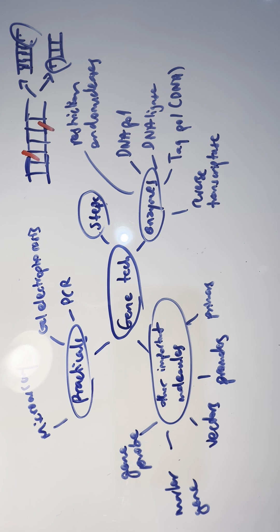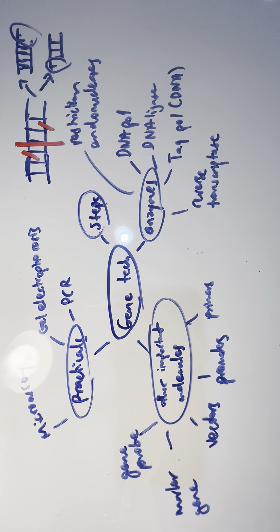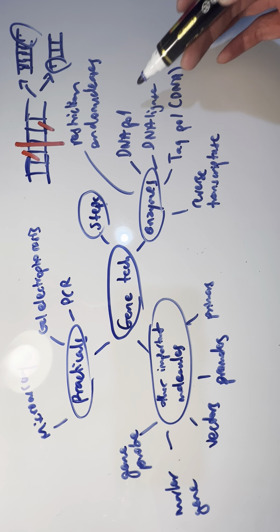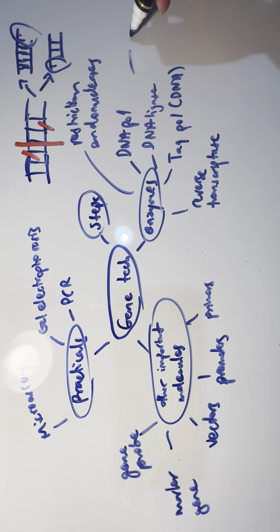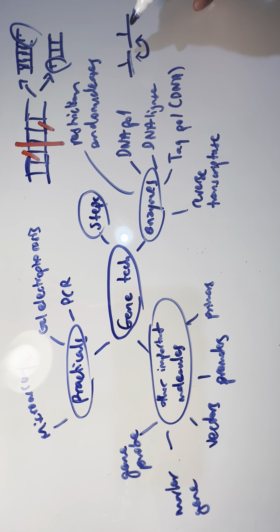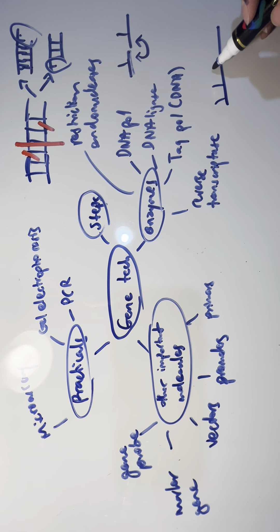There are also restriction enzymes that give you blunt ends, where instead of cutting unevenly they cut straight across, giving straight blunt ends with no bases sticking out. This brings me to DNA ligase — its function is to, after you've cut blunt ends and added DNA fragments together, catalyze the synthesis of the phosphodiester bond between the two nucleotides to join them together.